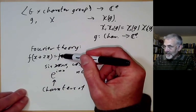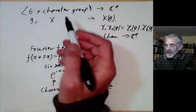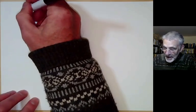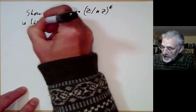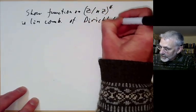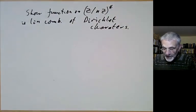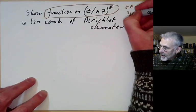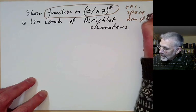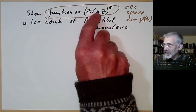Just as you can expand any function as a linear combination of e to the inx, you can expand any function on G as a linear combination of its characters. We're going to do this for Z over nZ star, showing any function on Z over nZ star is a linear combination of Dirichlet characters. The space of functions forms a vector space of dimension phi of n, with a basis of indicator functions on each element.